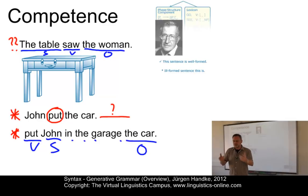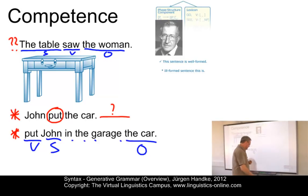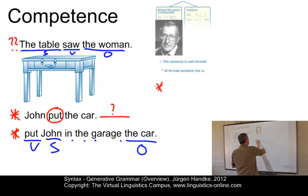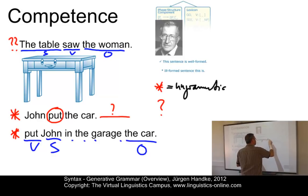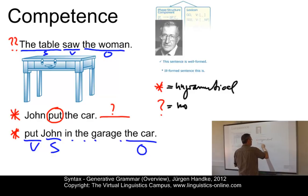We have learned how to assess the status of a sentence. In linguistics we use two symbols: the asterisk and the question mark. The asterisk means ungrammatical, and the question mark means non-meaningful or semantically odd.